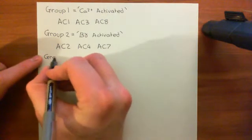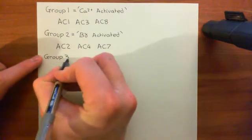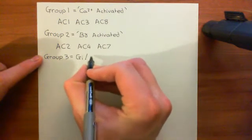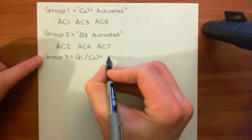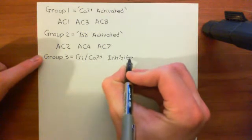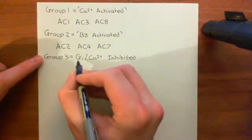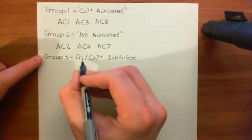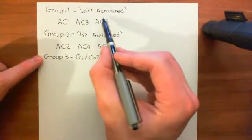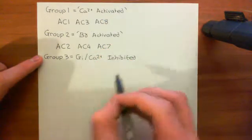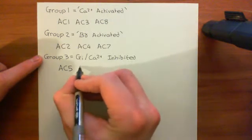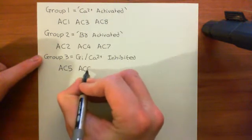Group three is very important for us. This is the family of GI/calcium-inhibited adenylyl cyclases. This family is not only inhibited by the alpha-I subunit of the heterotrimeric GI G protein, but also by calcium — so they're the exact opposite of group one. They're actually inhibited by intracellular calcium, and this group contains adenylyl cyclase 5 and adenylyl cyclase 6.